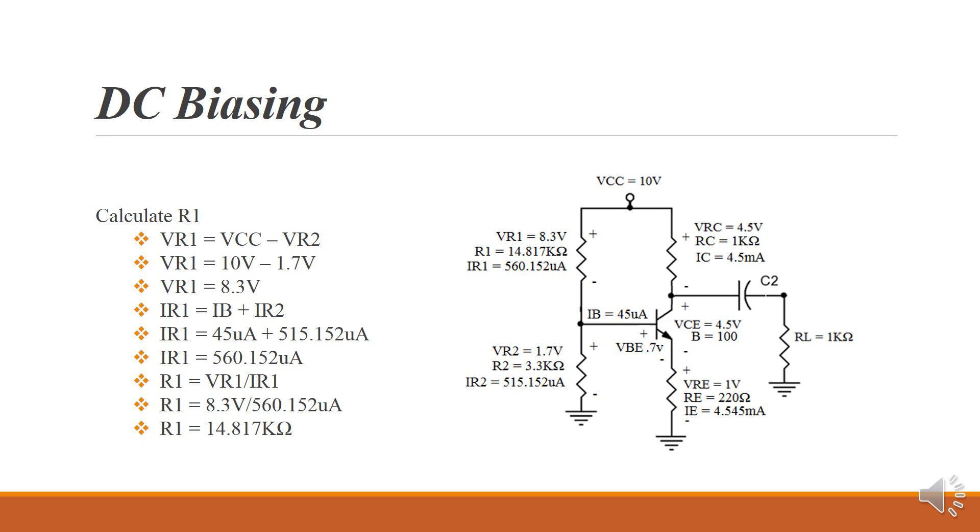For IR1, we've got 45 microamps plus 515.152 microamps. So for IR1, we've got total current of 560.152 microamps.